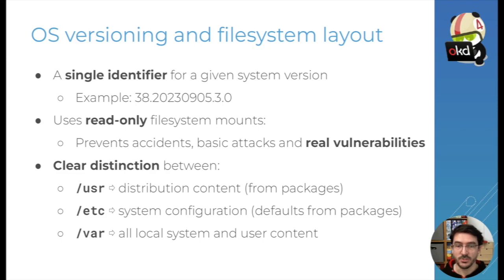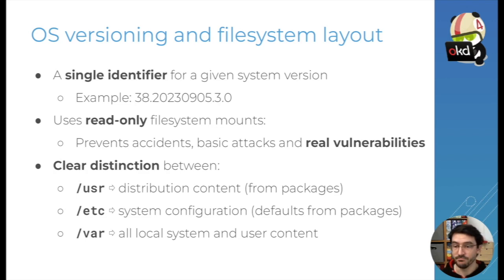With this comes a clear distinction: /usr contains the content coming from the distribution — from Fedora CoreOS and from the packages — and the administrator writes changes to /etc with system configurations, which comes with defaults from packages. Finally, all user or system user content is stored in /var, which is writable, just like /etc. RPM-OSTree takes extra care to not touch the content in /var during upgrades.